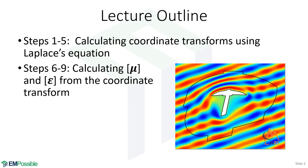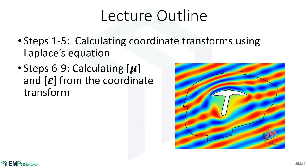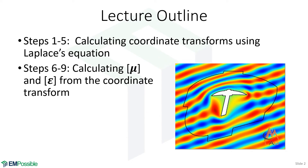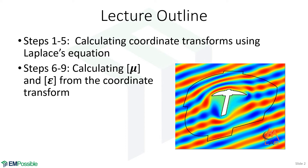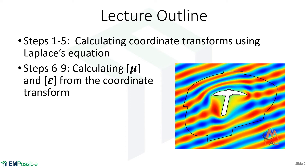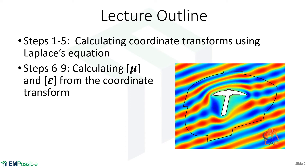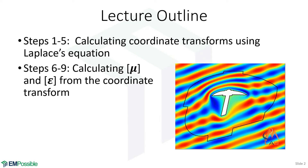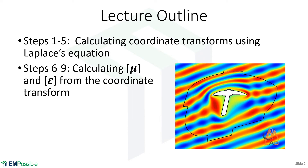Once we have that coordinate transform, steps six through nine discuss how to calculate the permeability and permittivity tensors from that coordinate transform. So let's get right into this.